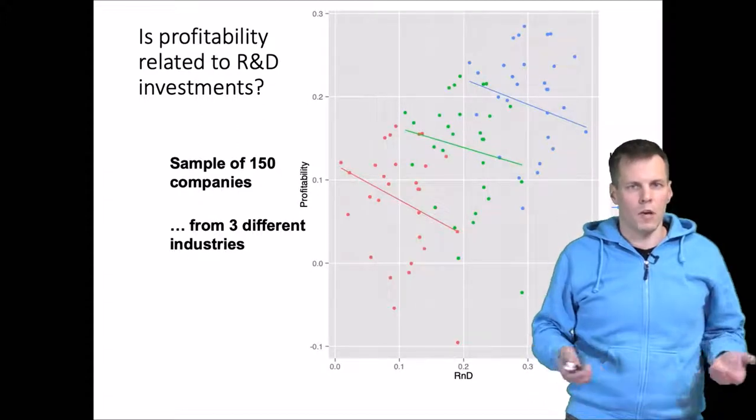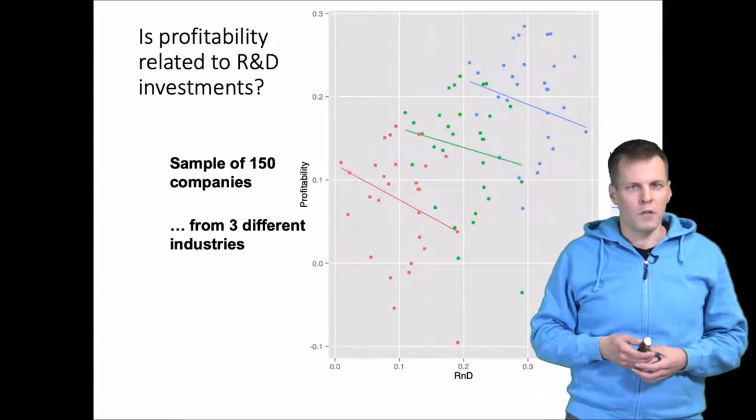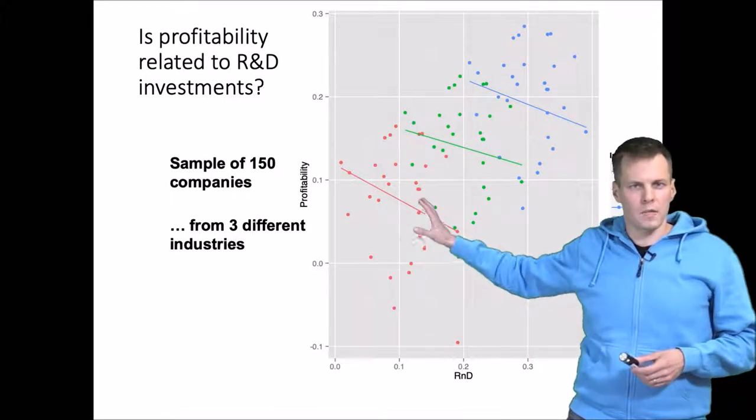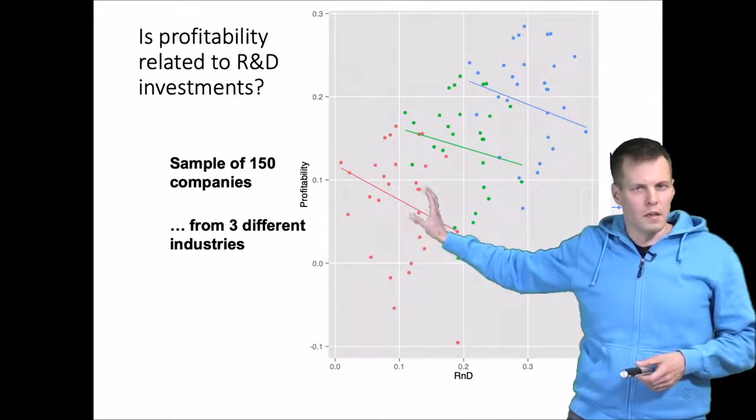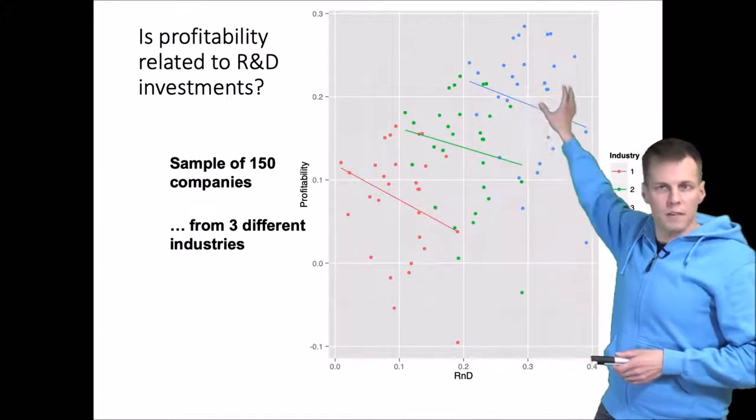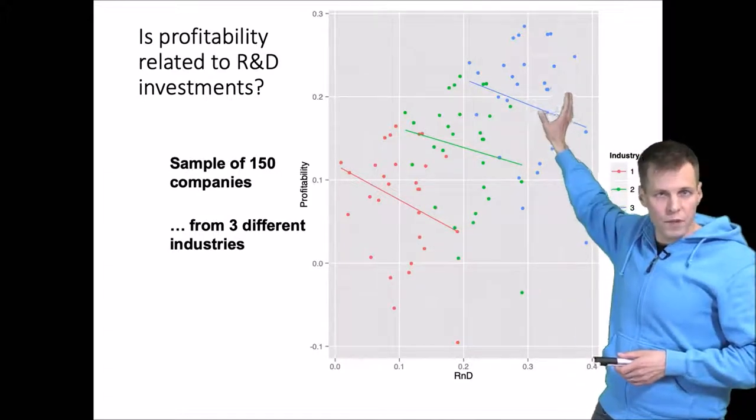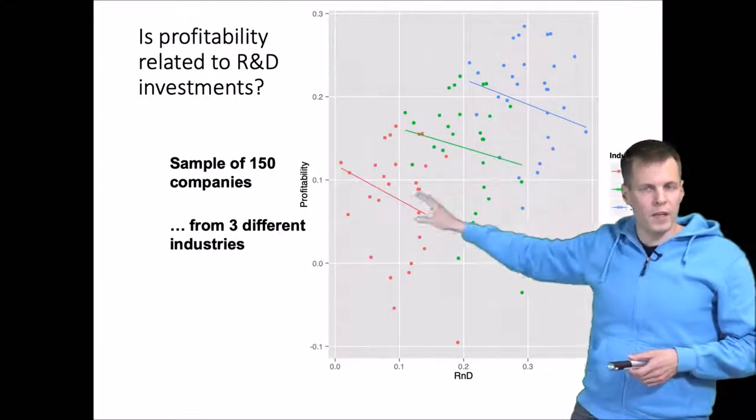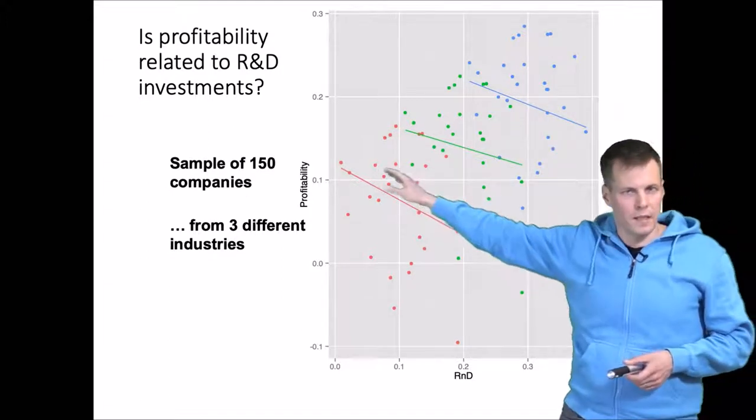It could because the data could actually look like this. So it is possible that this red industry here is not very profitable and doesn't spend much on R&D. And this blue industry here is very R&D heavy and also very profitable. But within an industry, the effect is actually negative.